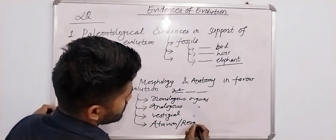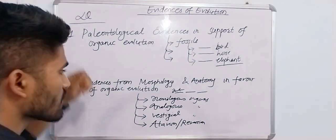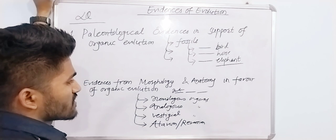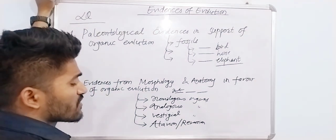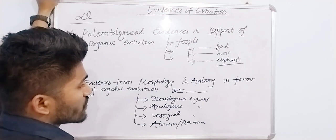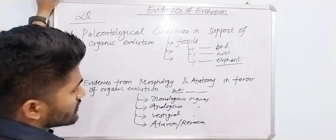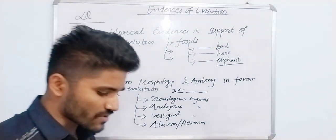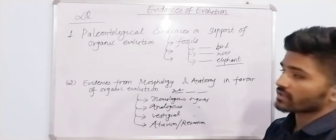For homologous organs, give the definition and examples. For analogous organs, give the definition and examples showing how they are evidence of evolution. For vestigial organs, give the definition and key examples. Vestigial organs show the appearance of ancient characters.